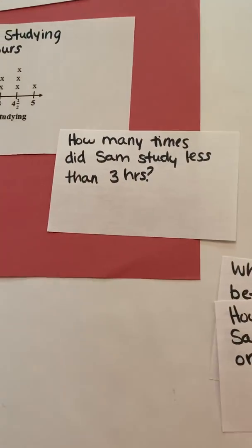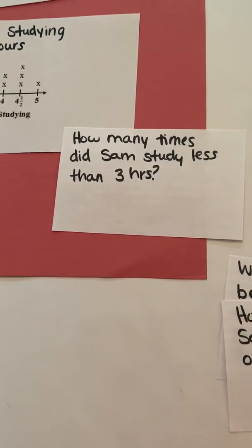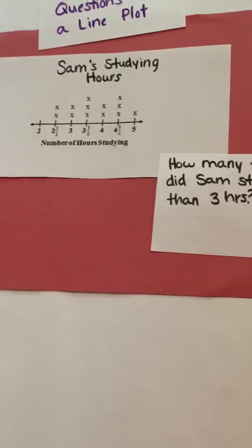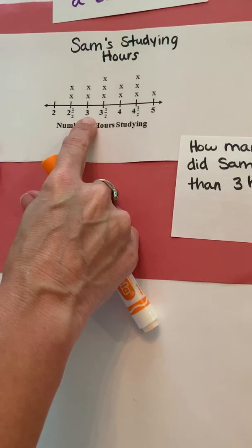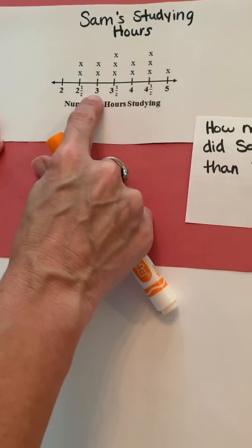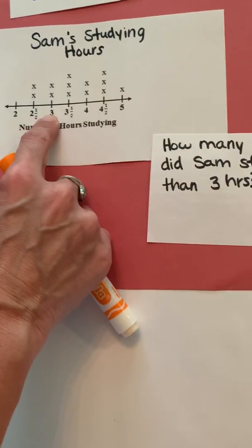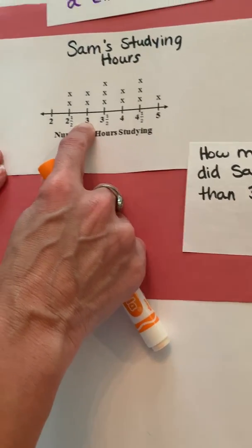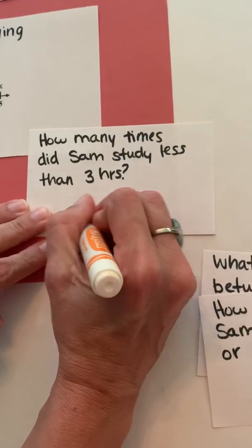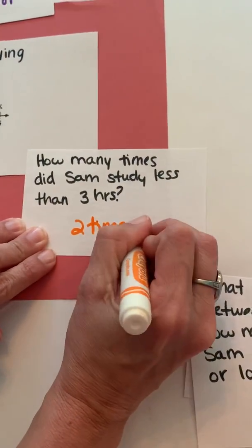And our last question, how many times did Sam study less than three hours? All right, so I'm going to look back up my graph. Now this time it does not include the three. Remember it says less than three. So I don't want to count anything three or above. I want to count everything below the three. So he studied two times less than three hours. All right.